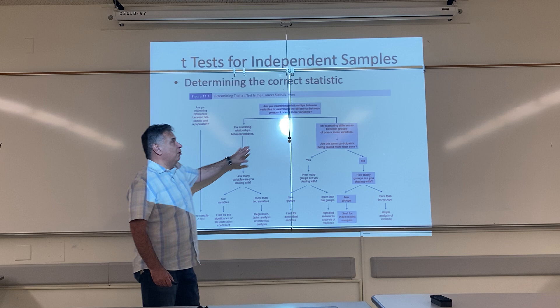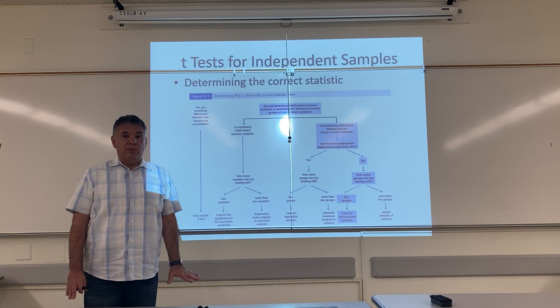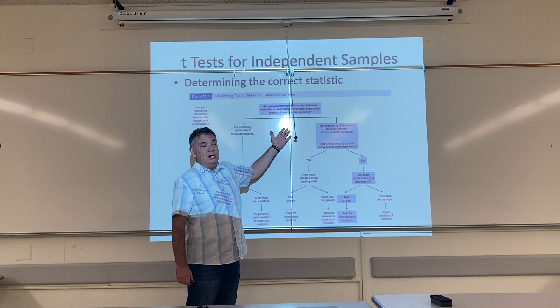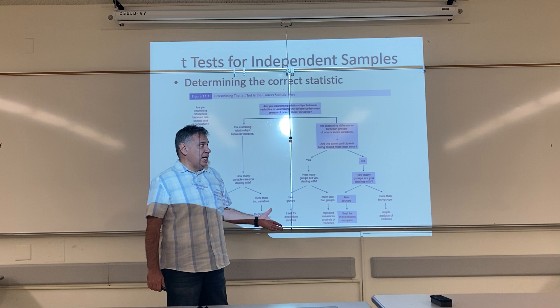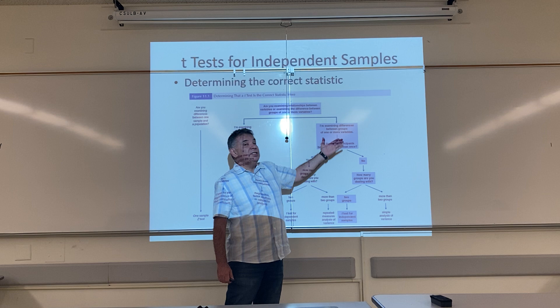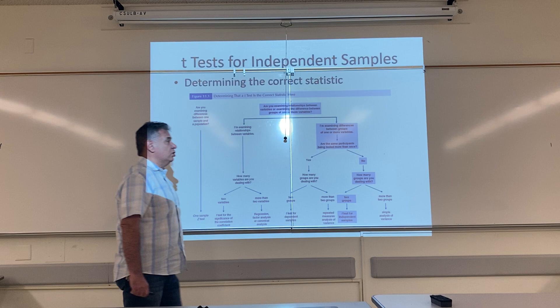Let's first find out, by using this flow chart that's in your book, when should we be using an independent sample t-test? The first question we need to ask is: are we looking to see if there's a relationship among variables, or are we looking for differences between means? For example, are we looking to see if the average score for men is different than the average score for women? For this chapter, we are examining the differences between the means from groups — we're looking at the differences between the averages.